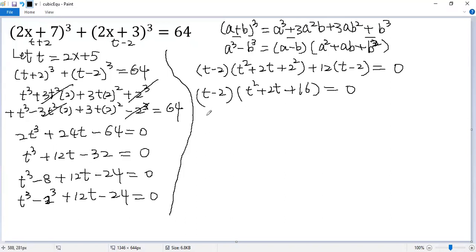So we have two possibilities. One is t - 2 = 0, the second t² + 2t + 16 = 0. For the first one, we get t equals 2.